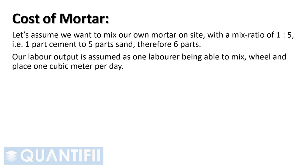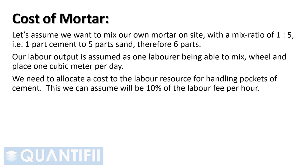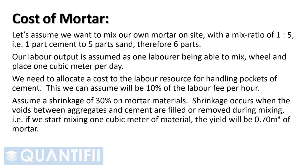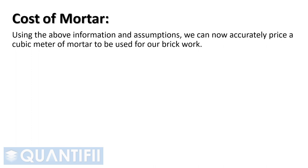Our labor output is assumed as one laborer being able to mix, wheel, and place one cubic meter per day. We need to allocate a cost to the labor resource for handling pockets of cement, which we can assume will be 10% of the labor fee per hour. Assume a shrinkage of 30% on mortar materials. Shrinkage occurs when the voids between aggregates and cement are filled or removed during mixing — that is, if we start mixing one cubic meter of material, the yield will be 0.70 cubic meters of mortar. Using the above information and assumptions, we can now accurately price a cubic meter of mortar to be used in our brickwork.